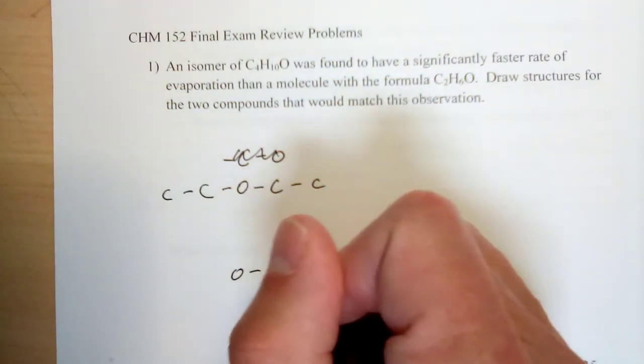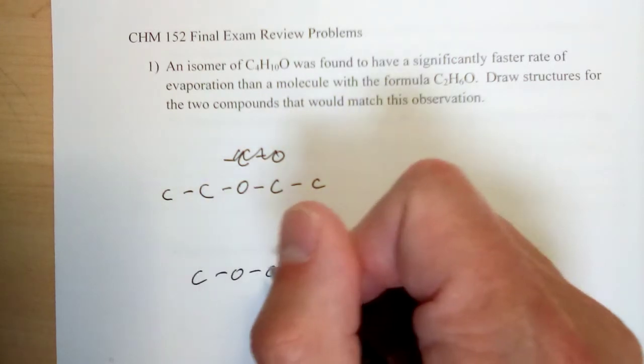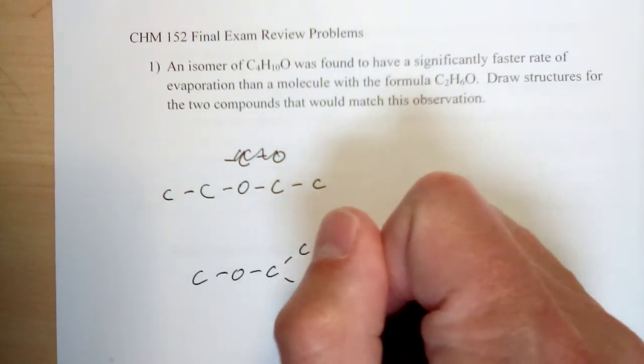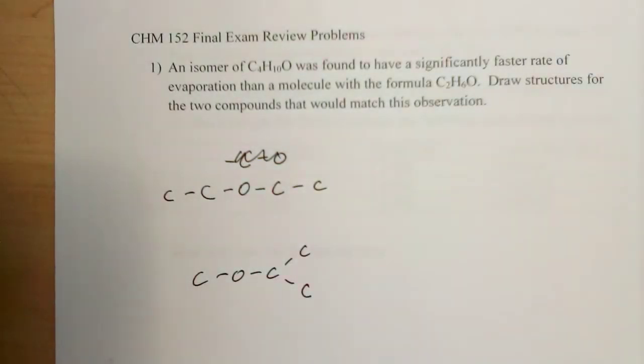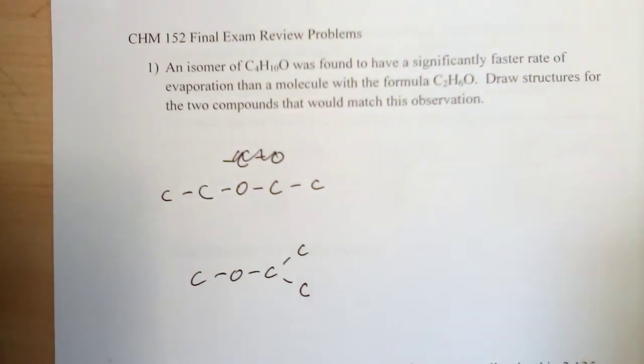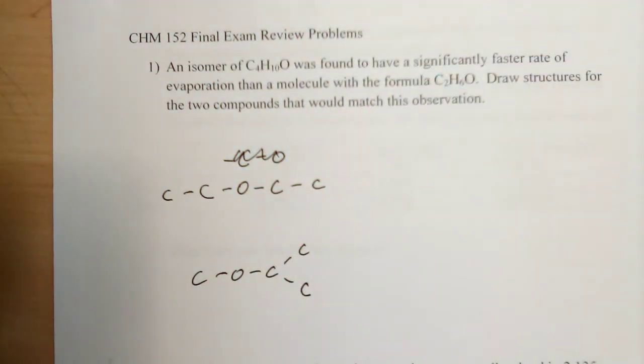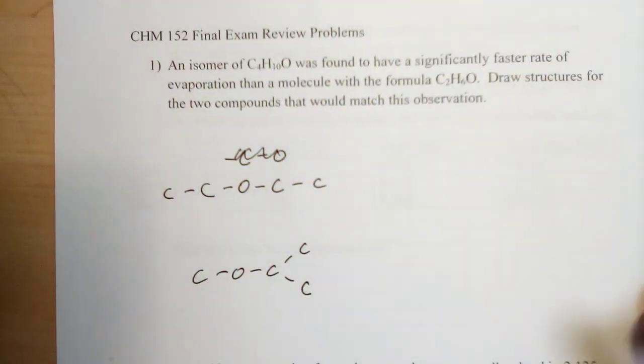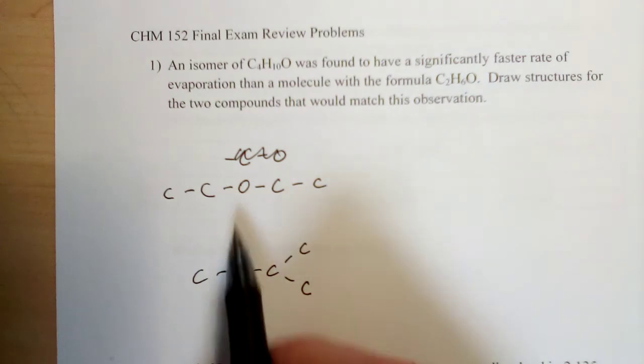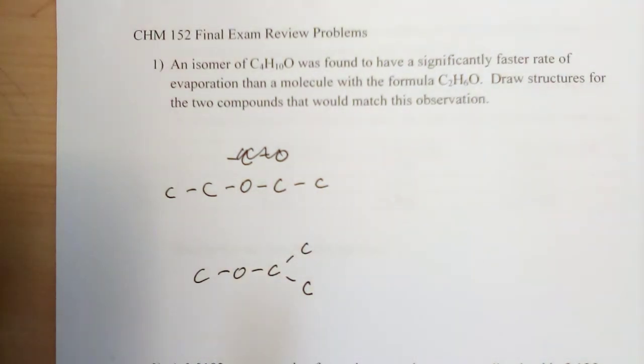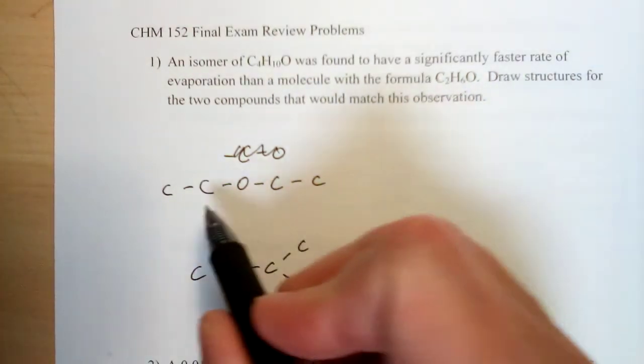Now from here I can think about how am I going to attach the other carbons. So one option would be just add one to each side, and let's draw a second option down here which is also going to match our observations described in the problem. I'll put both carbons on one side and I'll get a different structure. These would be isomers—they end up with the same molecular formula but they have different structures. But in this case, neither would have hydrogen bonding, so both of these should have a weaker set of intermolecular interactions and evaporate fairly quickly.